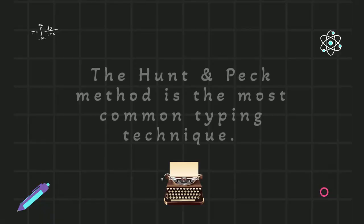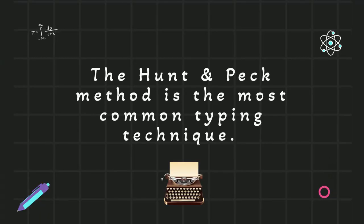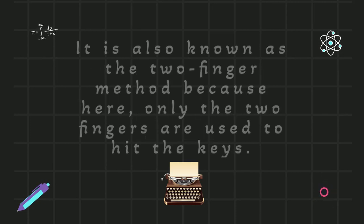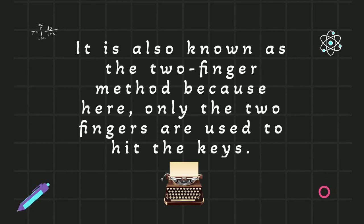The hunt and pick method is the most common typing technique. It is also known as the two finger method, because only two fingers are used to hit the keys.